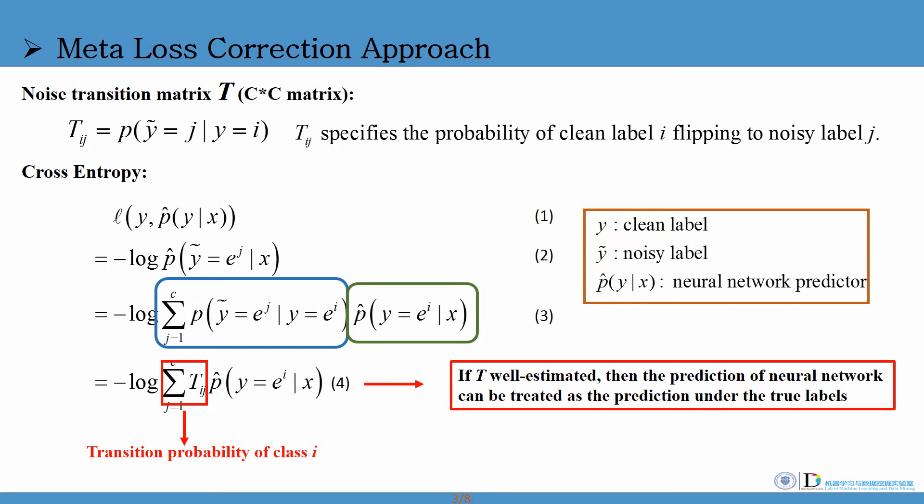With noise transition matrix, CE loss under supervision of noisy label is transformed to equation 4. If T is well estimated, then the prediction of neural network can be treated as the prediction under supervision of the clean labels.